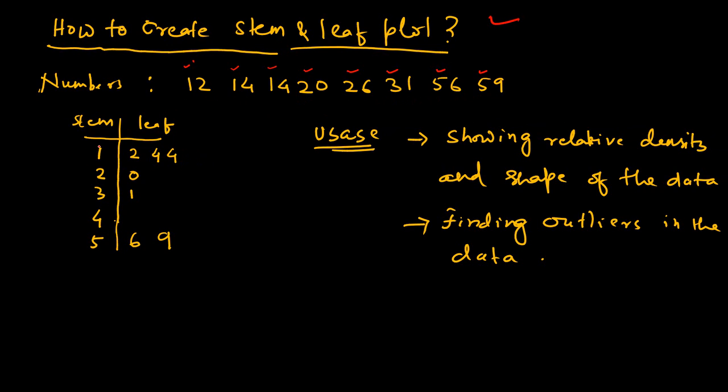We put these numbers on the left side and call it the stem. So we put 1, 2, 3, 4, and 5. Remember that we do not have 4 in our data, but we still need to put 4 - we cannot have a gap.